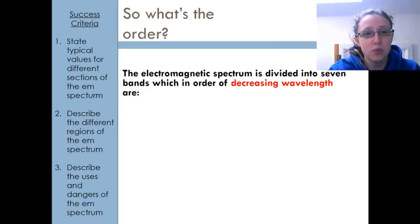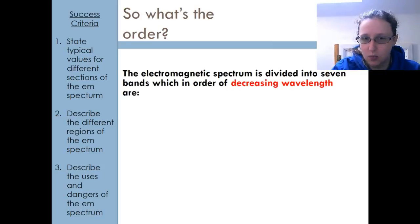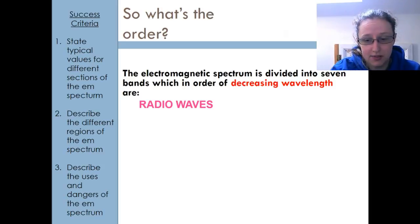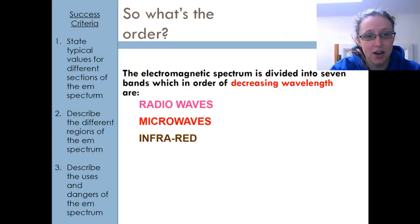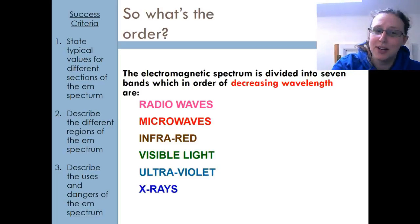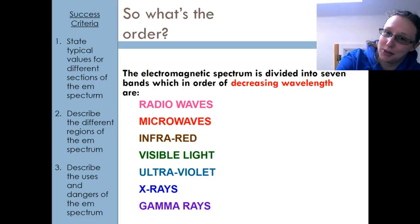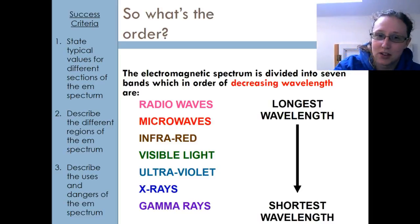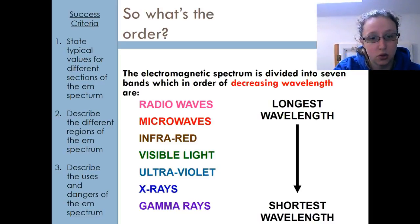We should know the order and we tend to talk about them in terms of decreasing wavelength. Starting with the longest wavelength: that's radio, then microwave, infrared, visible light, UV, X-ray, gamma rays. So that goes longest wavelength to shortest wavelength.